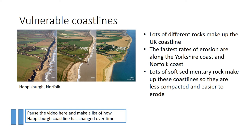After the 1953 storm surge, a lot of money was spent building better coastal defences along the North Sea coast, including Happisburgh. However, the erosion here has continued and a succession of coastal defences has failed to protect the village at the top of the cliff. Pause the video here and make a list of how Happisburgh coastline has changed over time.